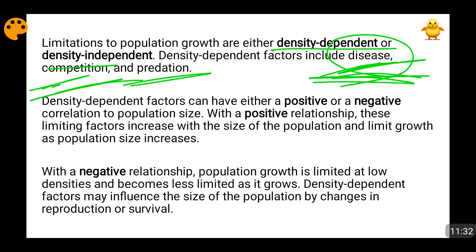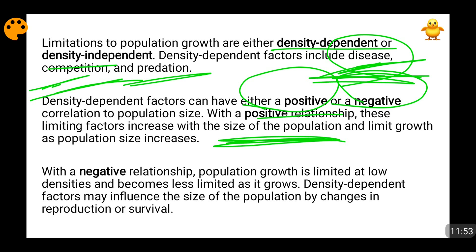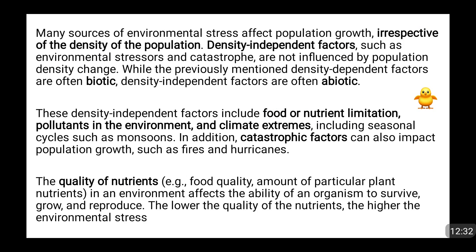Density-dependent limiting factors can be further subdivided into positive density-dependent factors and negative density-dependent factors. Positive density-dependent factors means that as the population size increases, the concentration of limiting factors also increases — so as the population grows, the factors controlling that growth are also intensifying. Negative density-dependent factors means that when population density is low, the limiting factor is highly active, but as population density increases, the role of that limiting factor decreases.